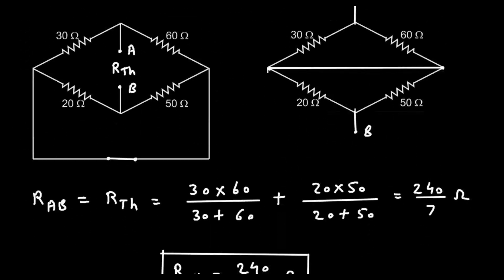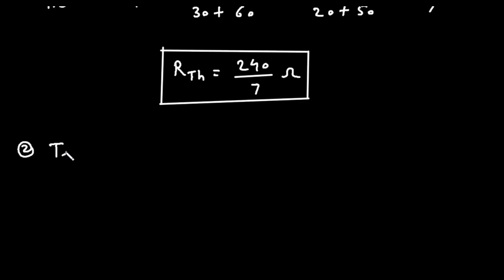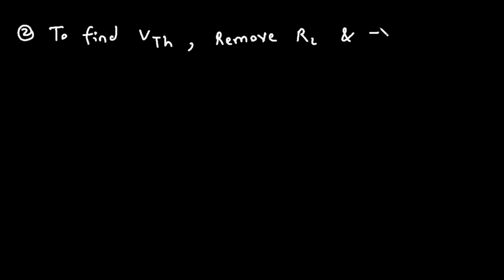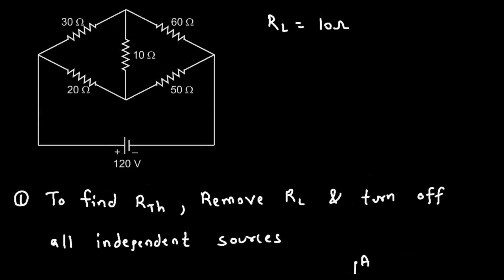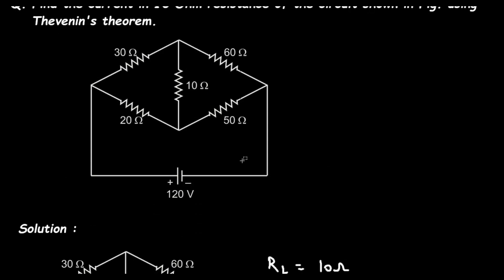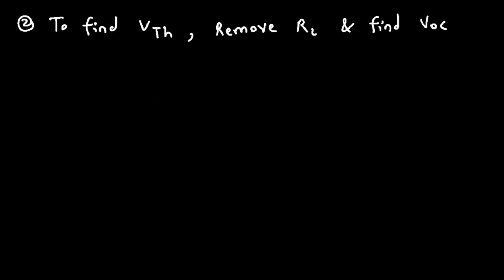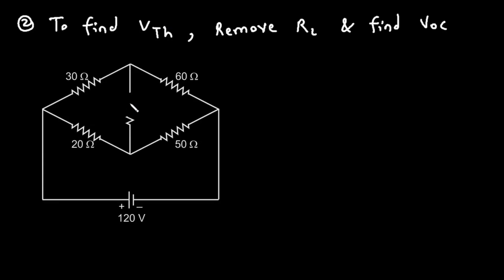Next, step number 2 is to find VTH. To find VTH, again remove RL and find VOC, the open circuit voltage. Here, we remove RL, so this will be terminal A, this will be terminal B, and this will be our VTH — positive at terminal A and negative at terminal B. We have to find the voltage at this node.